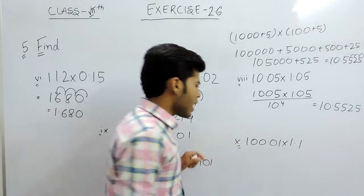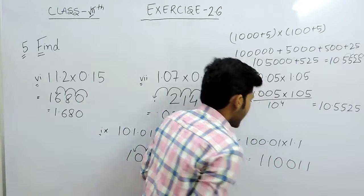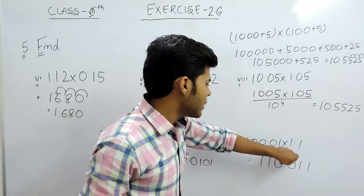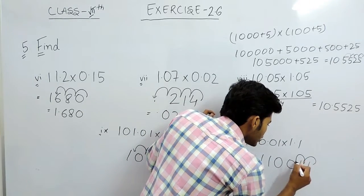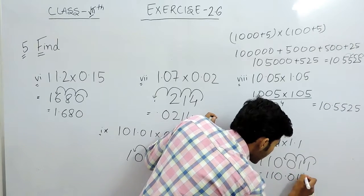And now in the last part, after multiplication, it will become 110011. And there are 3 decimal places, so 1, 2, and 3. So the answer will be 110.011.